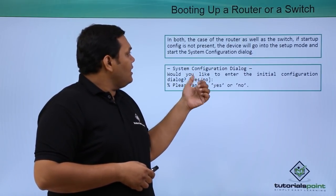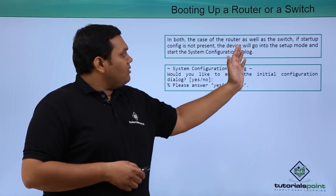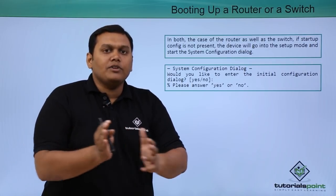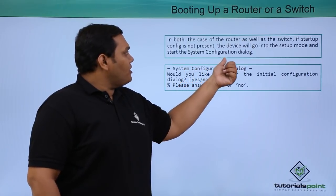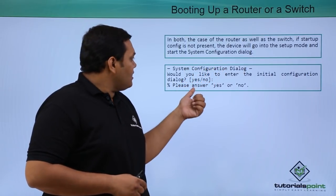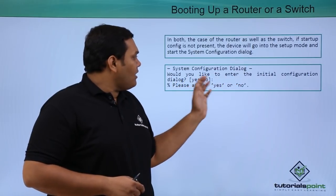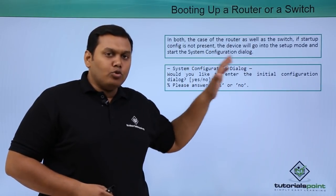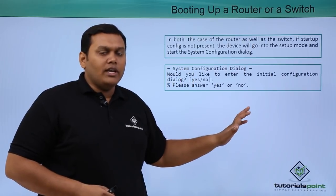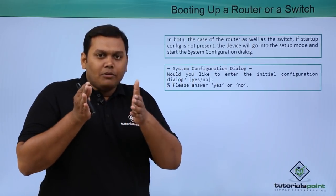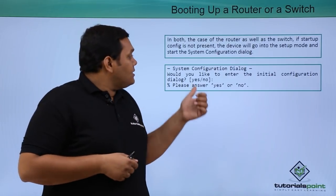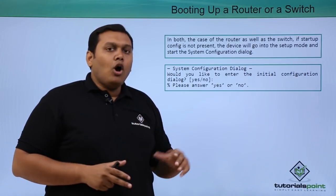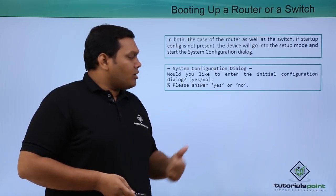You can also see a dialog box for the system configuration dialog. If the device is not started with the proper boot sequence, it will go into the system configuration dialog module, which asks: 'Would you like to enter the initial configuration?' The initial configuration starts with the POST test, then the bootstrap process, Cisco IOS loading, and configuration file loading. If this is not followed, the dialog box appears and prompts you to start the initial configuration. If you click 'No,' automatic selection will be taken by the dialog box.